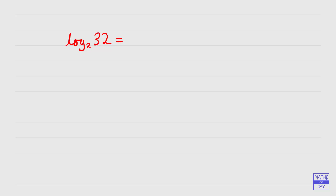We're thinking about the number 2 and what power we have to raise it to to get an answer of 32. Well, 2 times 2 times 2 times 2 times 2 is 32. In other words, 2 to the power of 5 is 32. So that means that log to base 2 of 32 is 5.